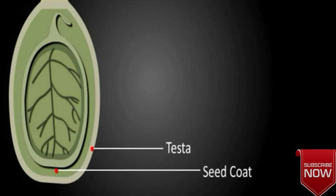A soft, white, spongy structure called caruncle is present at one end of the seed.